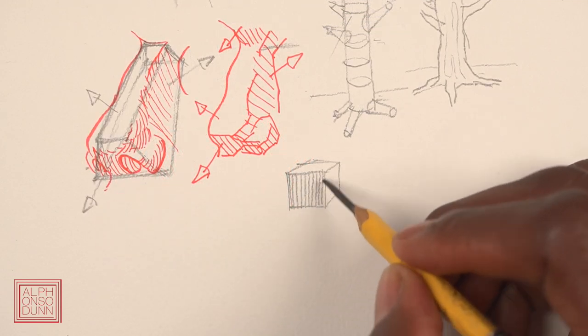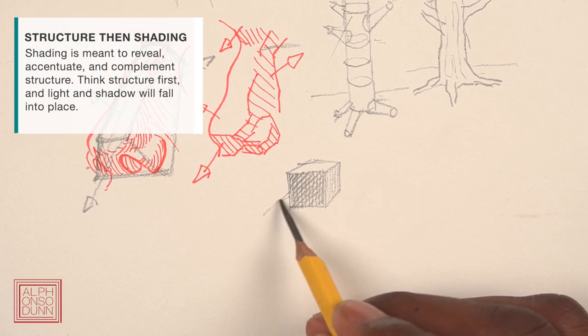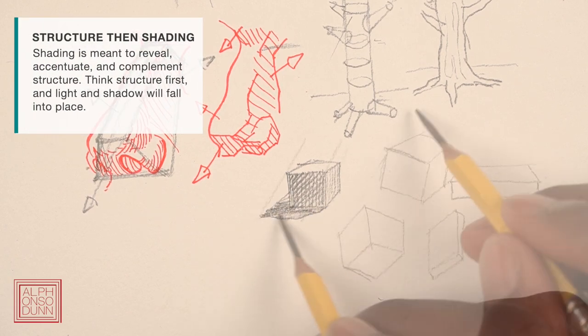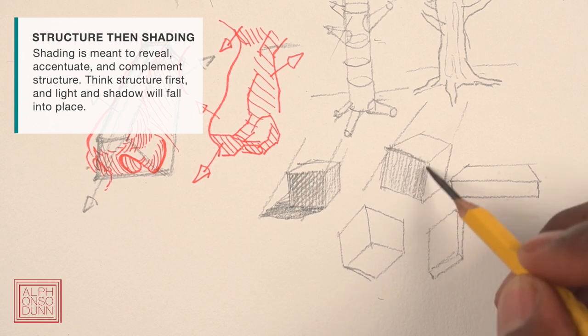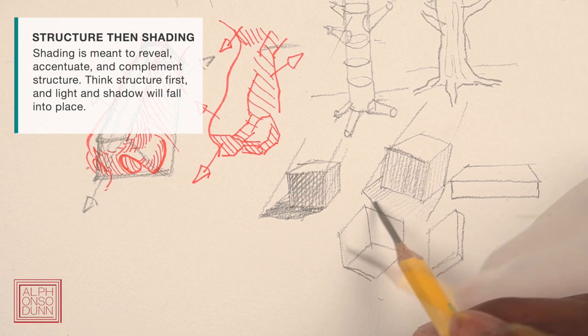Even with shading, no shading should be done before you think about the structure of the mass you're shading. In fact, light and shadow should always complement and accentuate structure since it's the structure that dictates the form's interaction with light.